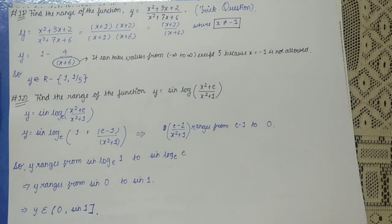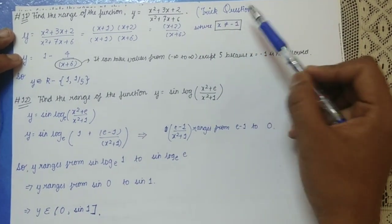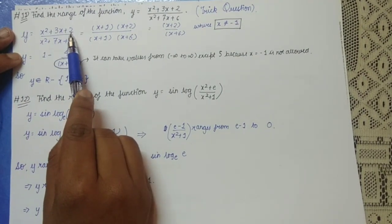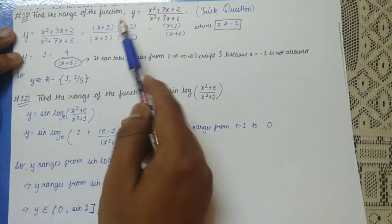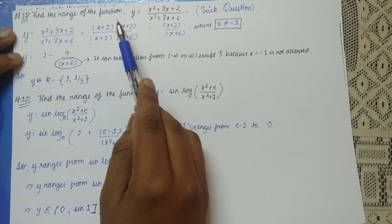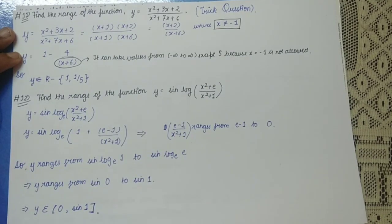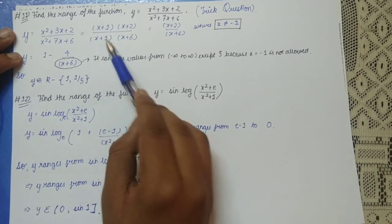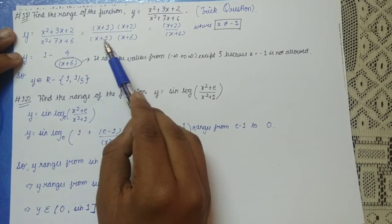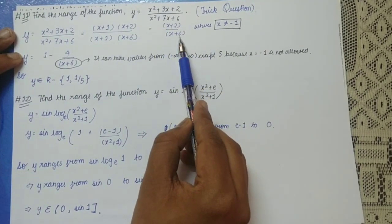Now we find the range of y = (x² + 3x + 2) / (x² + 7x + 6). I have labeled it a trick question — you will see why. The numerator factors as (x + 1)(x + 2) and the denominator as (x + 1)(x + 6). It seems natural to cancel (x + 1), but note that x ≠ −1, since at x = −1 the denominator is 0. After cancellation the expression becomes (x + 2)/(x + 6), valid for x ≠ −1.